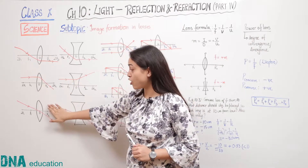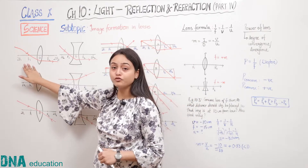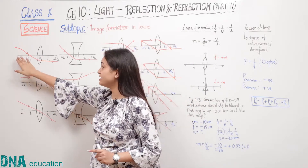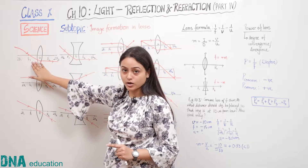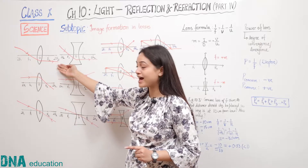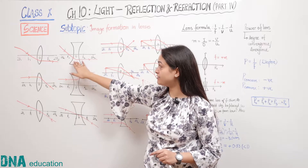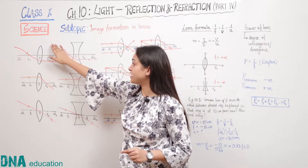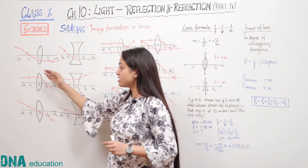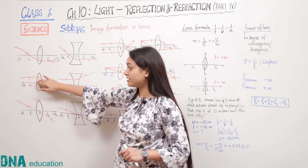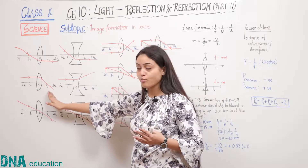These are the convex lenses and these are the concave lenses. The first rule for formation of ray diagrams is that if a light ray comes from focus, it will emerge parallel to the principal axis. Similarly, in case of concave lens, if a light ray comes from focus, it will emerge parallel to the principal axis. Conversely, if a light ray is parallel to the principal axis, it will refract from focus.